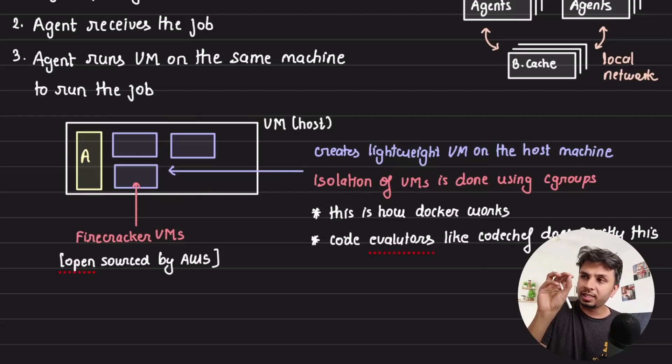Firecracker is open source by AWS, you can check it out. It's a fab project. And this is typically how your code evaluators, like your CodeChef, LeetCode of the world, they run on Firecracker VMs. So this is an extremely lightweight VM, which runs in an isolated container.